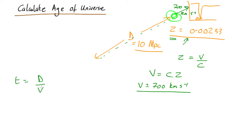So the distance is 10 megaparsecs. A megaparsec is a million parsecs, so that's times 10 to the 6 times the parsec, which is 3.09 by 10 to the 16 meters, divided by the velocity of 700 times 1000 to convert from kilometers per second to meters per second.